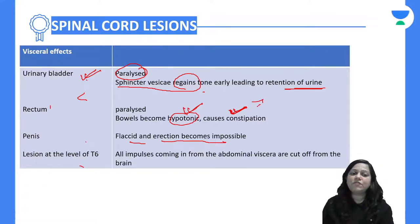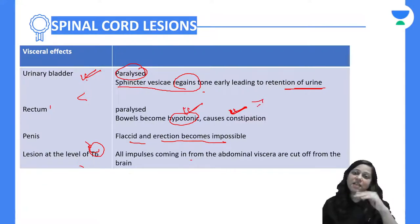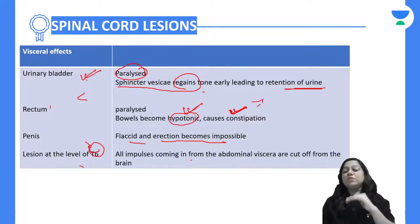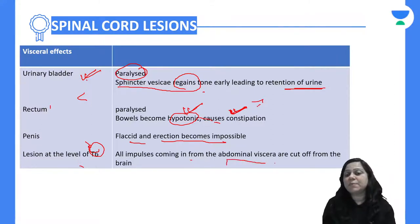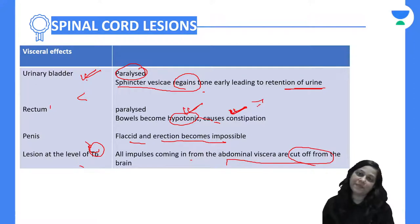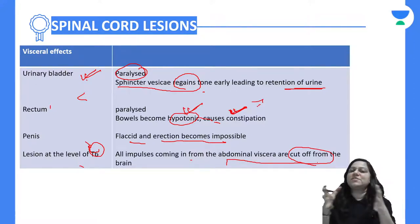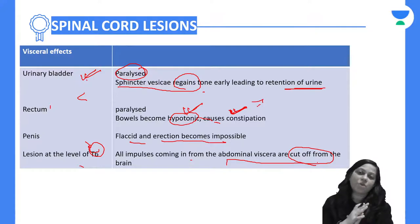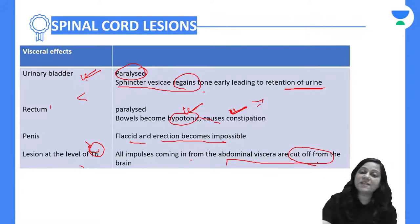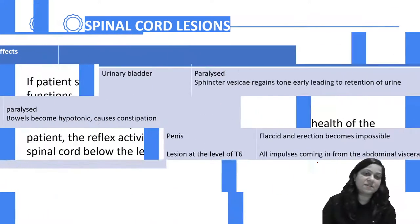If the lesion is at the level of T6, all the impulses coming from the abdominal viscera will be cut off from the brain. Sensations like distension of the viscera and related feelings will be lost. That is the visceral effect.